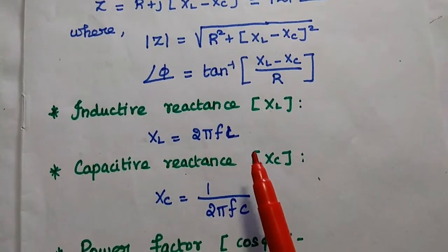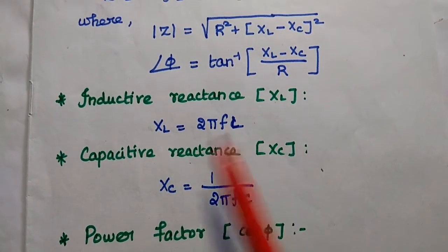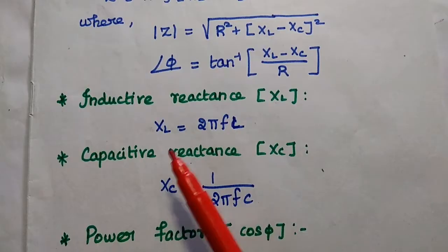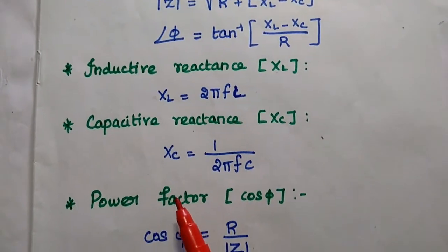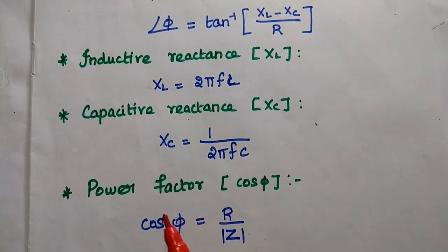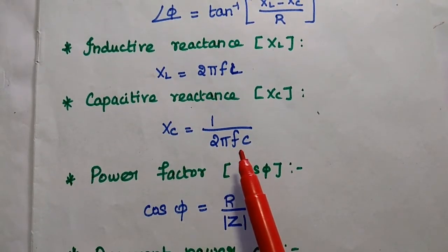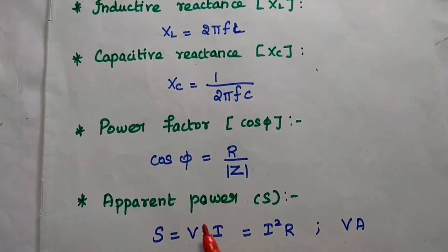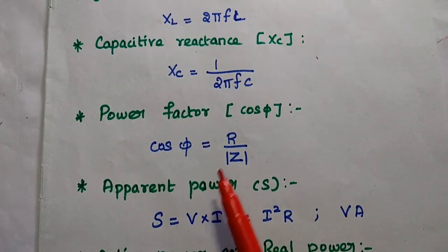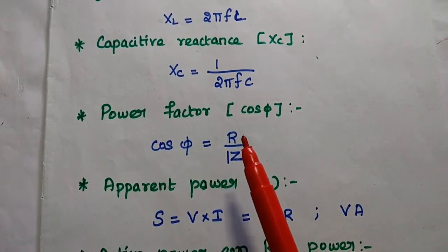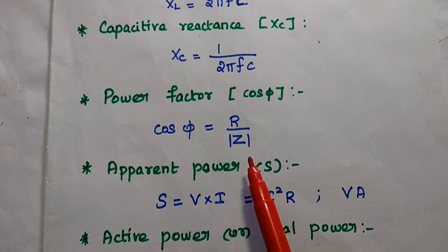The inductive reactance XL = 2πFL, where XL is directly proportional to frequency. The capacitive reactance Xc = 1 / (2πFC). The power factor is cos φ = R / |Z|, the ratio of resistance to the modulus of impedance.